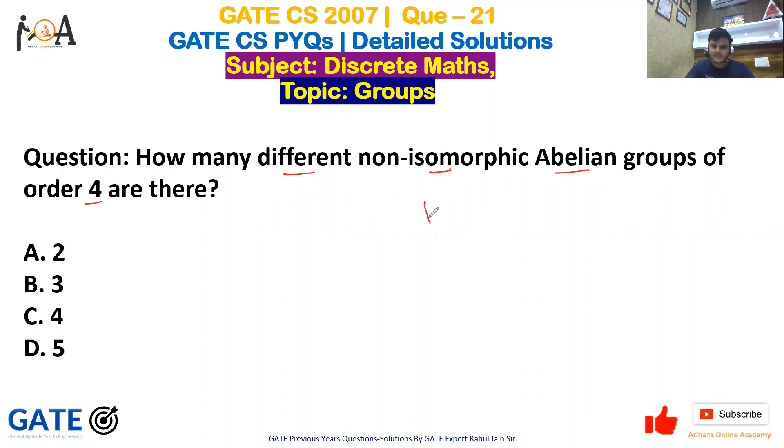If you have read the theory of groups and Abelian groups, then if our order is p to the power k, the order of Abelian group is p to the power k where p is our prime number. Now the order given to us is 4, that is nothing but 2 to the power 2.